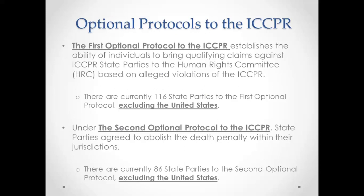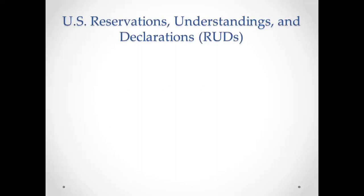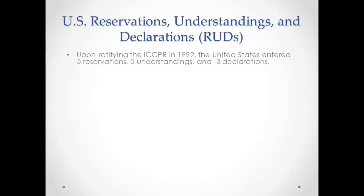US ratification did not come without conditions and qualifications. The US used a system permissible under international law — the use of reservations, understandings, and declarations, commonly referred to as RUDs. The US said it would ratify the treaty but with certain conditions — not adopting or accepting certain protections or obligations included in the ICCPR. There were five reservations, five understandings, and three declarations made by the US.